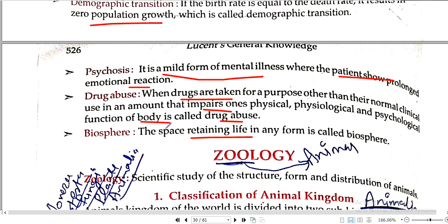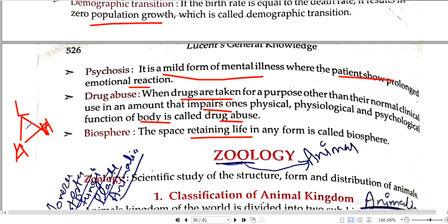Biosphere is a space relating to life, which includes the Lithosphere, Atmosphere, and Hydrosphere. When we combine Lithosphere, Atmosphere, and Hydrosphere, they form the Biosphere.